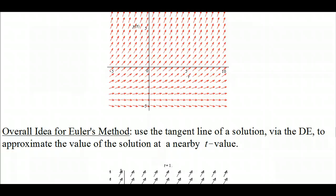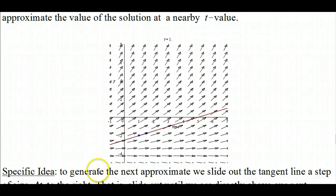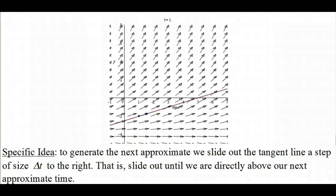The idea for Euler's method is that we're going to use the tangent line of a solution via the differential equation to approximate the value at a nearby value of t. You've got the slope field, the tangent line drawn through our initial point, and we're going to use that to come up with another approximate by sliding out the tangent line until we are directly above or below our next t value, which in our case is going to be 1.5 because we're starting at t equals 1 and increasing in steps of size 1 half.